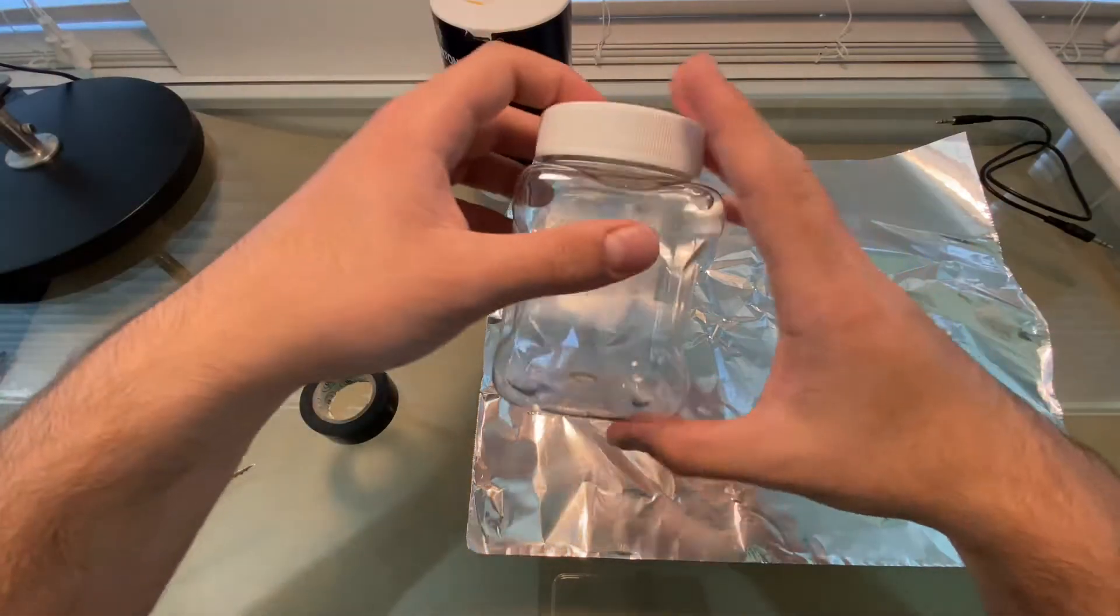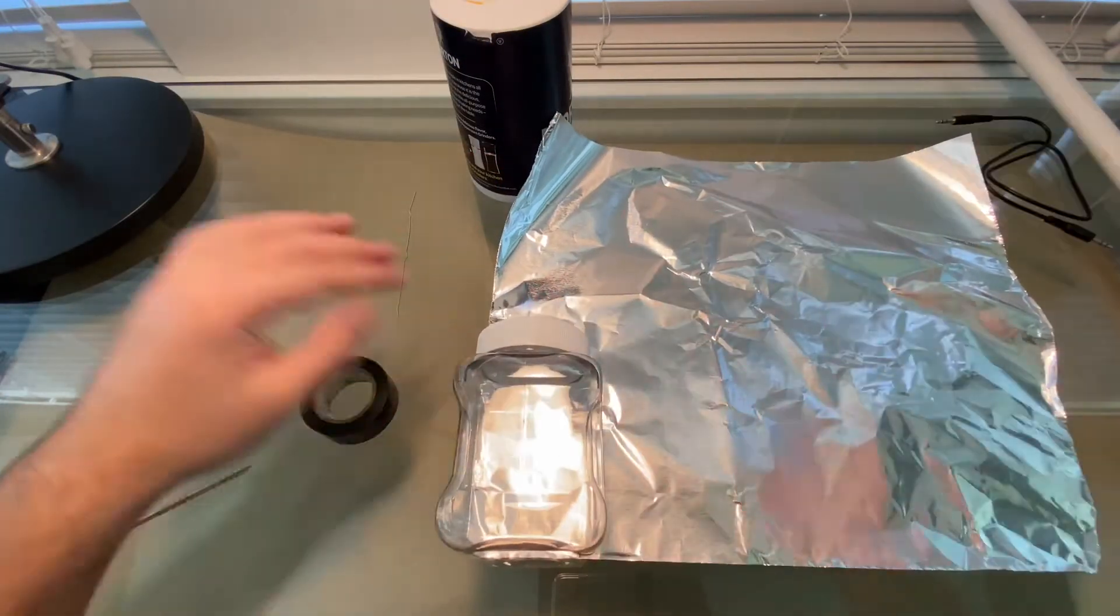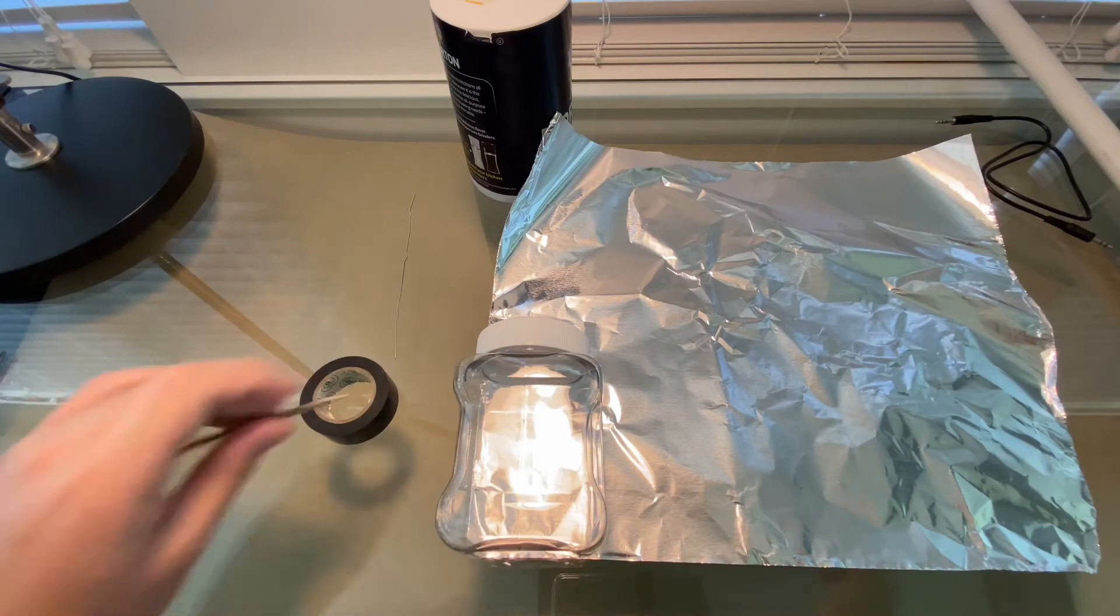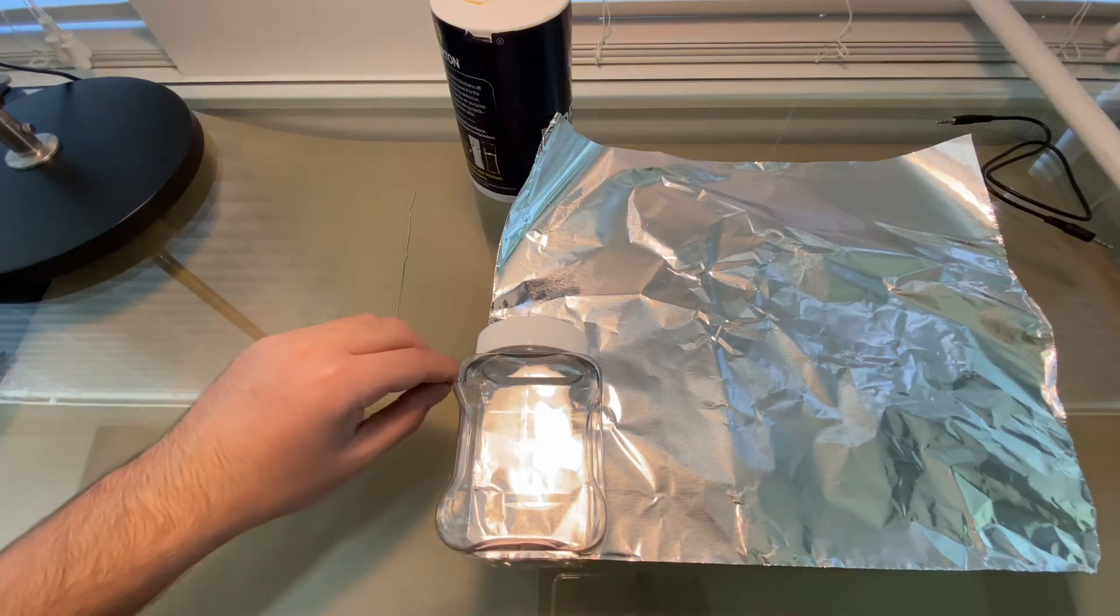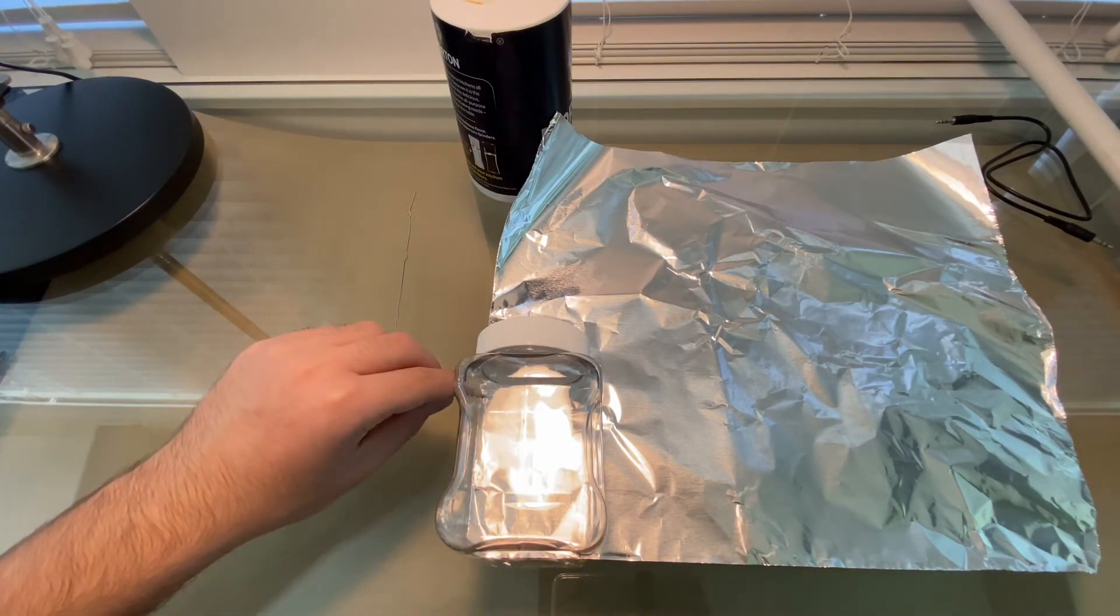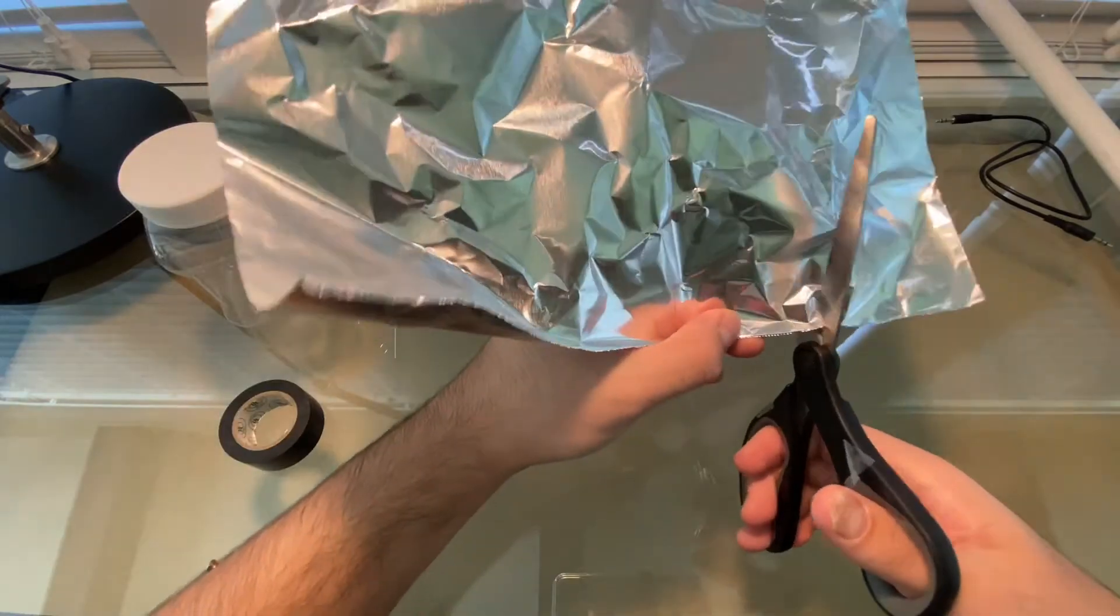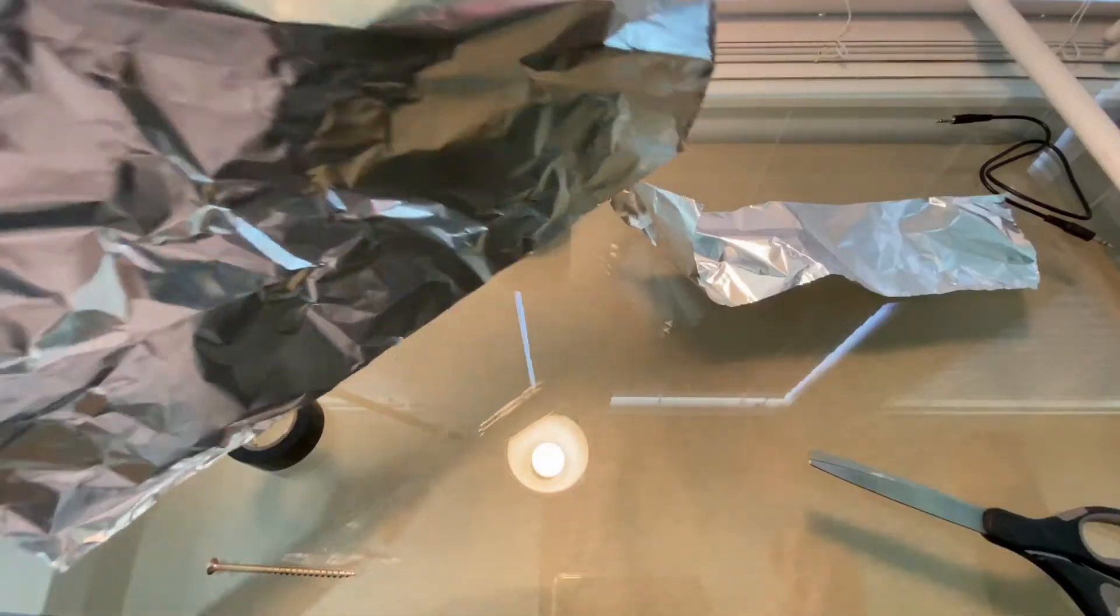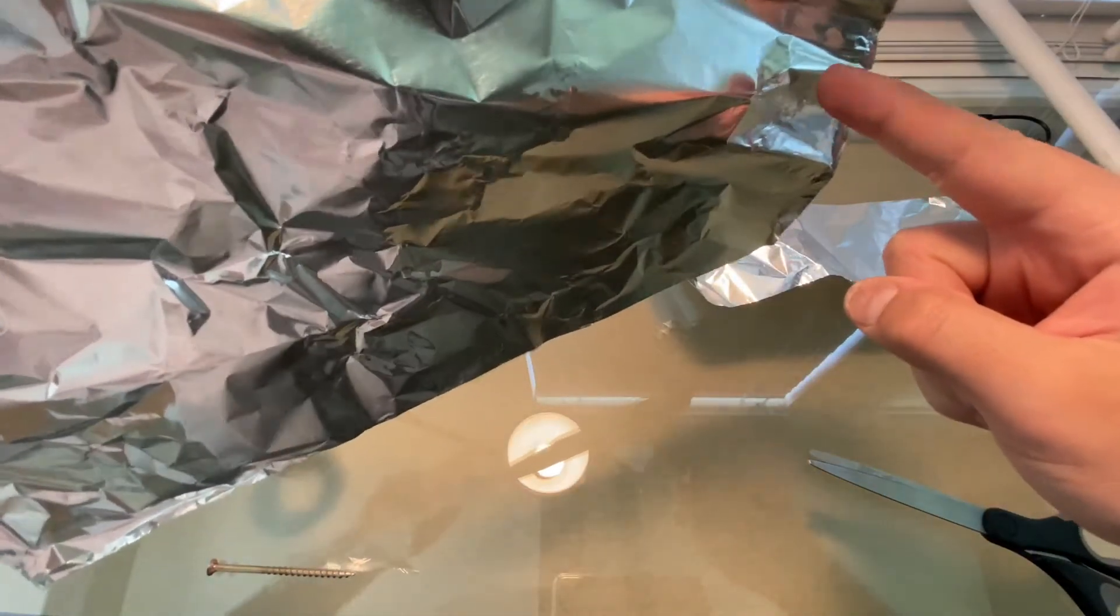So you first want to take your jar and put it on the aluminum foil just like this and make a little mark where the top of the body ends on your jar. Then you'll need to cut it out. Remember to not throw your aluminum foil away. You will need this for later and I'll explain why.